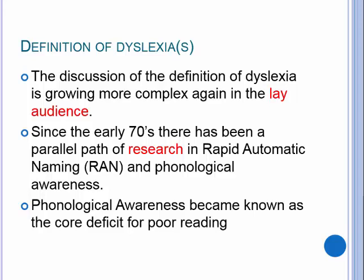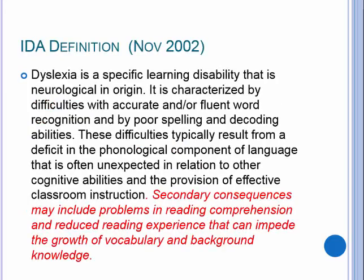Martha Denkla from Johns Hopkins was talking about rapid automatic naming in the 70s. Her protege, Mary Ann Wolfe, has increased that conversation significantly and made it much more public that rapid automatic naming should be considered a core component of dyslexia. One child may struggle with just phonological awareness, another may deal only with rapid automatic naming, and a third category involves both. Historically, phonological awareness has been known as the core deficit, but we need to expand our understanding of dyslexia, because that informs what we do with our kids.